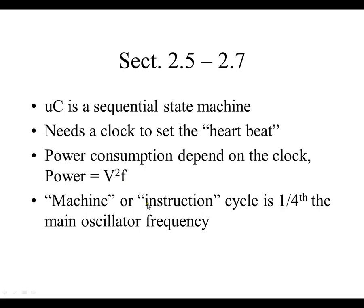The actual instruction cycle, or machine cycle, is one-fourth of the main oscillator frequency. So if you set a frequency of four megahertz, the instruction cycle is only going to be one megahertz. For a 20 megahertz crystal or clock speed, it's only going to be five megahertz — don't forget the one-fourth rule.